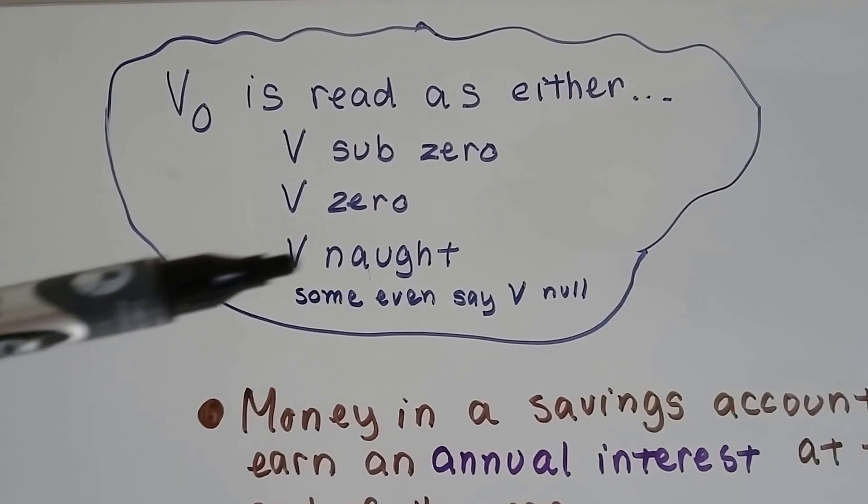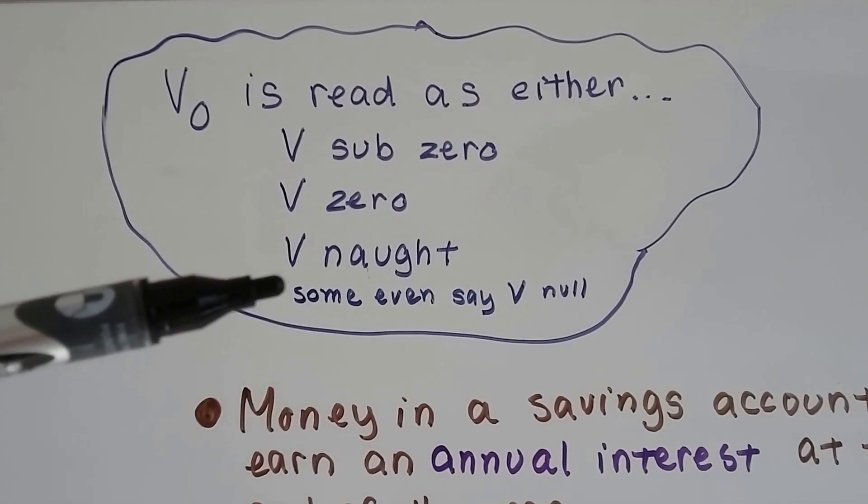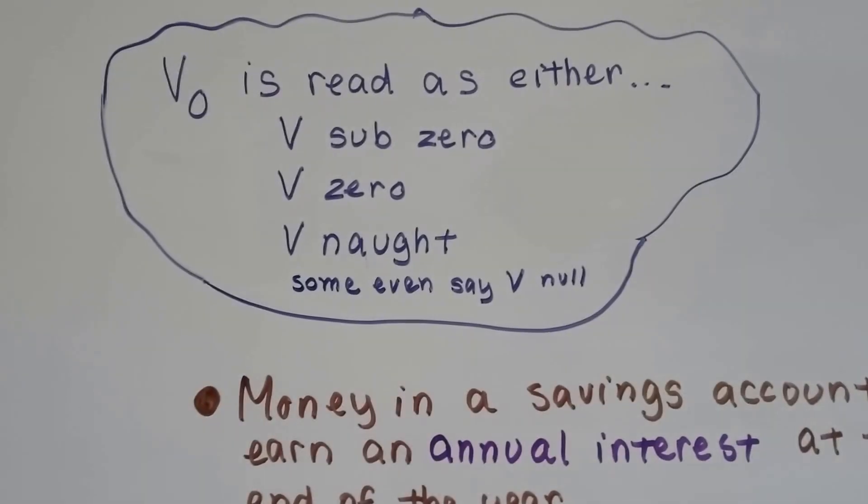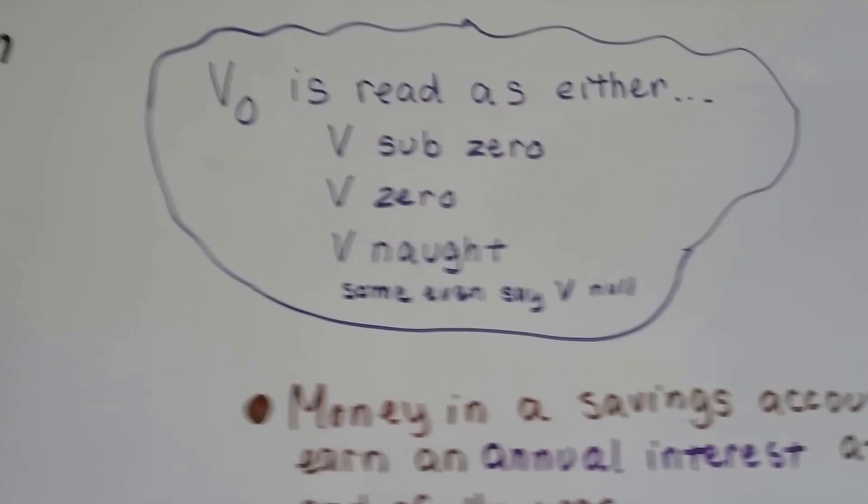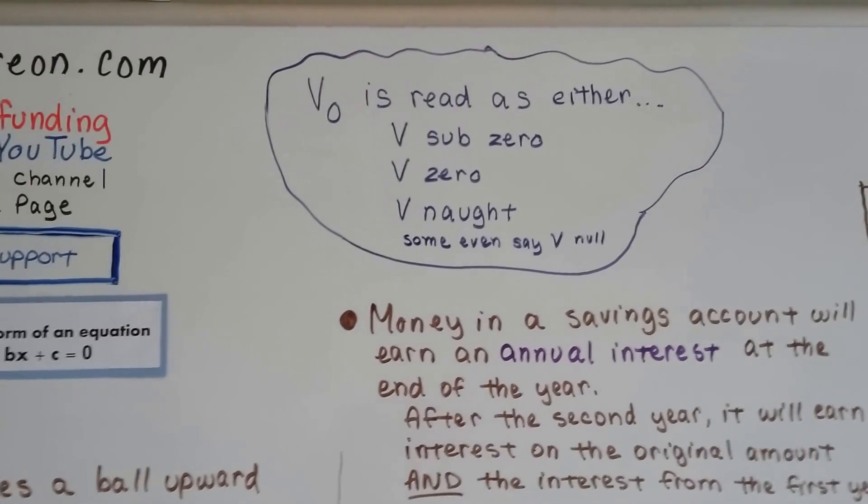You could read it as v zero. You could read it as v naught. Nought is a very old-fashioned way of saying nothing or zero. Some even say v null. So it depends on your preference. I usually either say v naught or v zero.